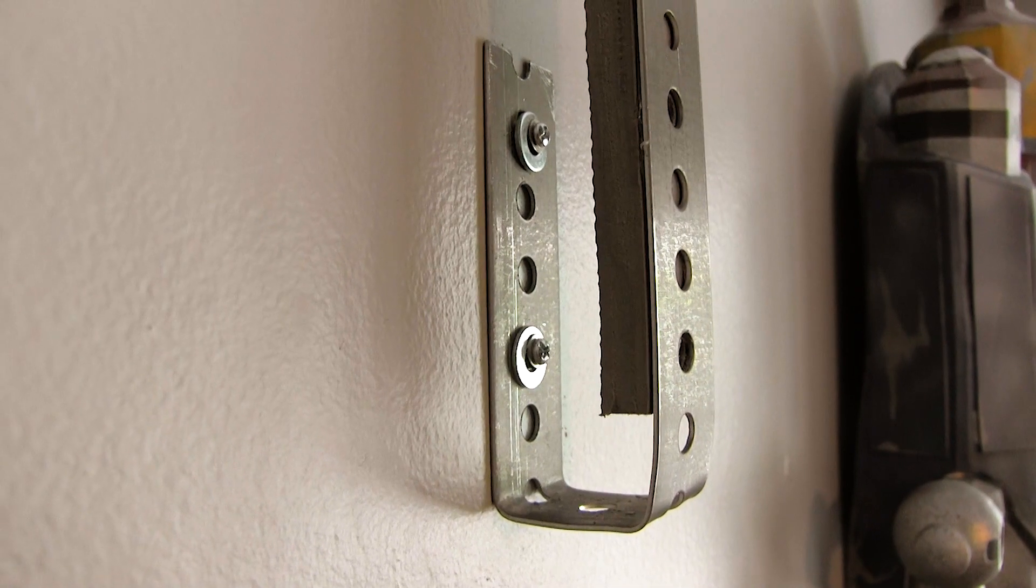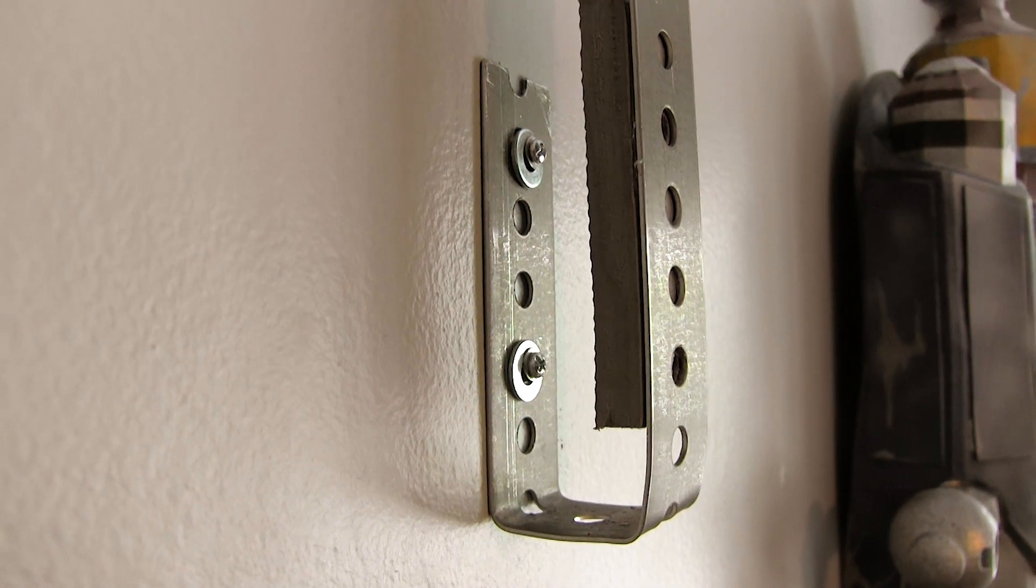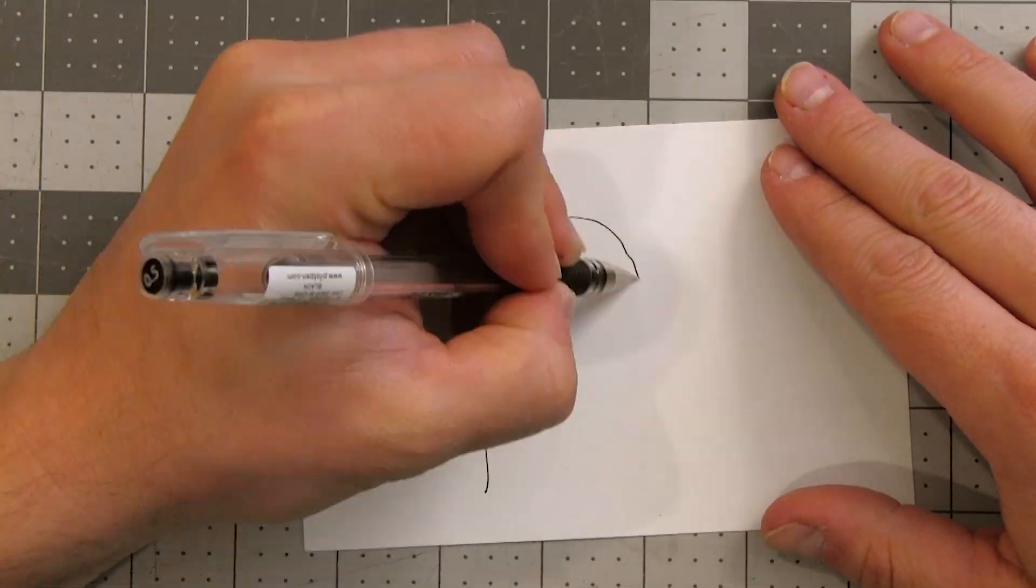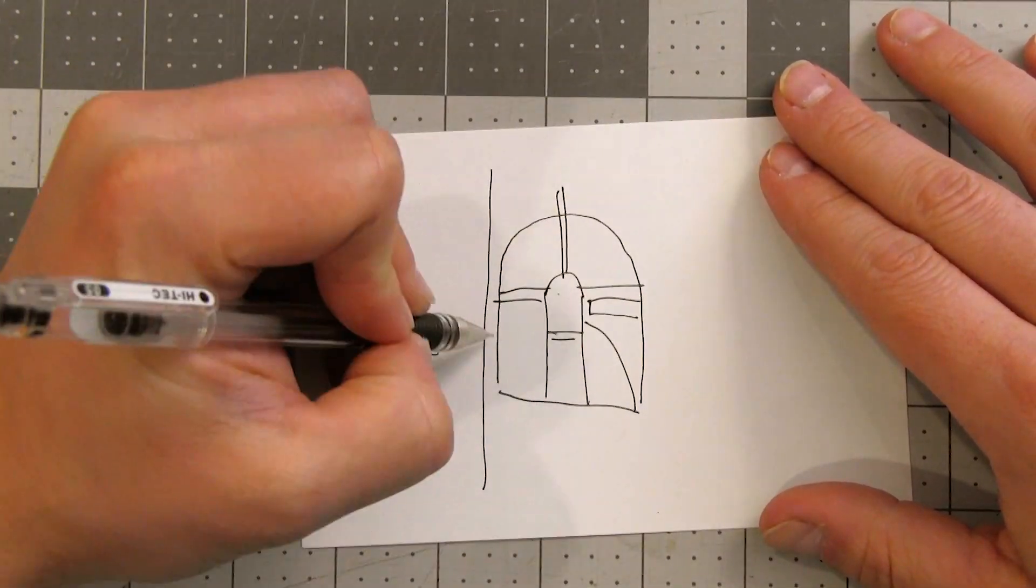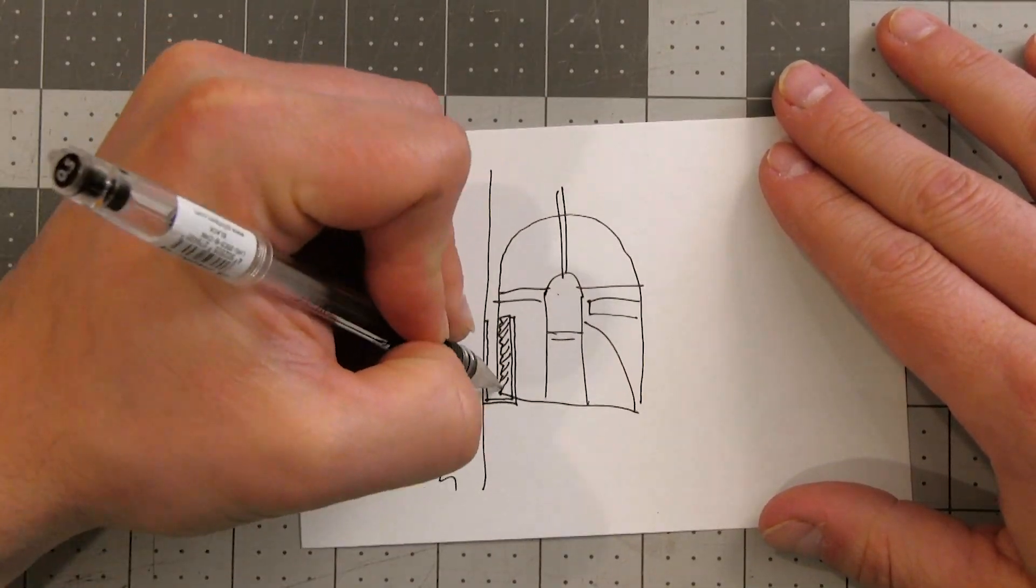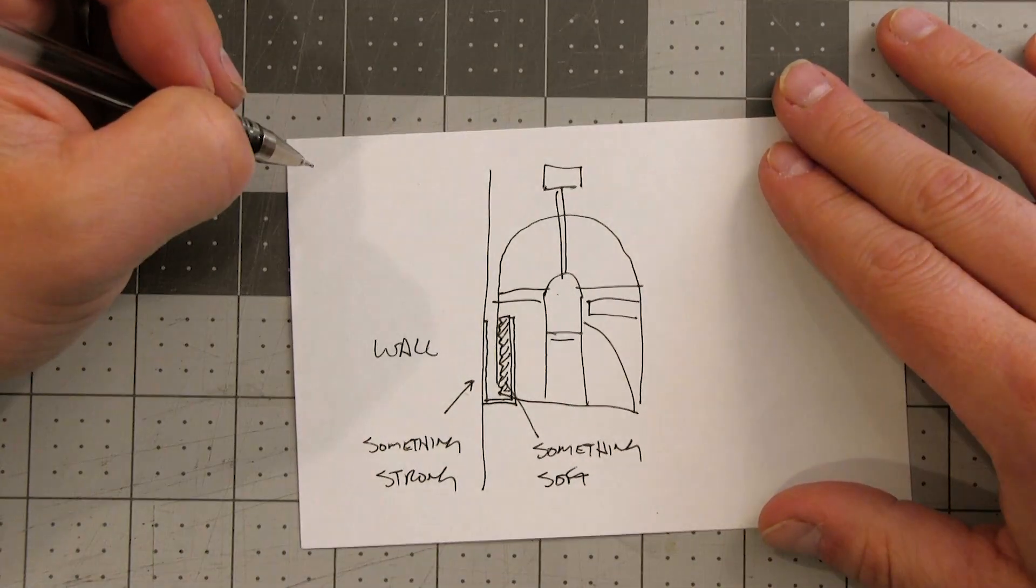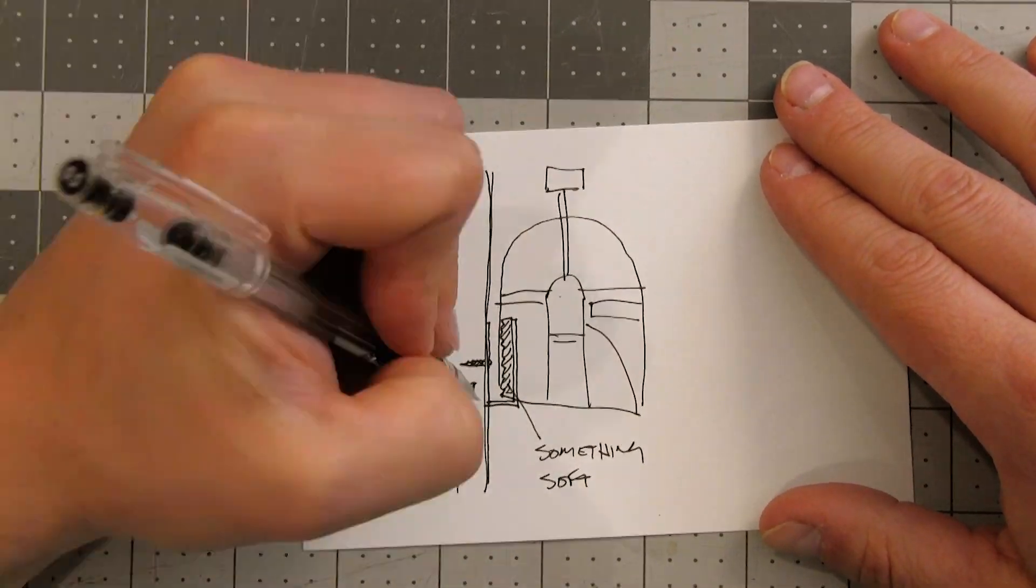I actually made a wall mount a while ago for my son's helmet, but I've always wanted to improve on the design. The basic idea is to make something that's strong enough to hold the helmet in place, soft enough that it doesn't damage the helmet, and small enough that it isn't seen much, if at all, and inexpensive.